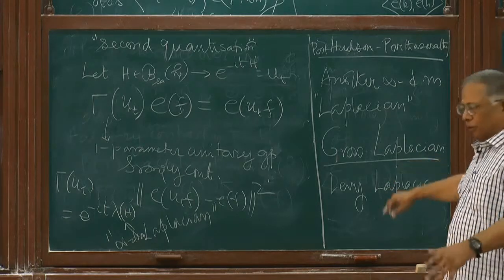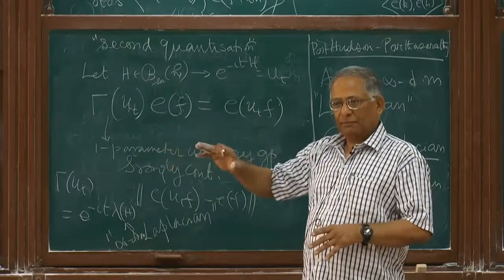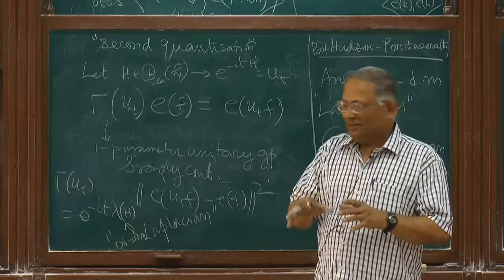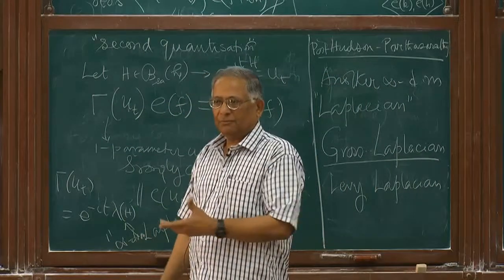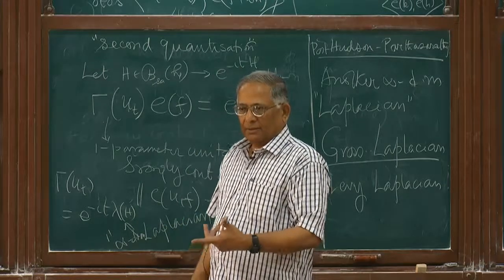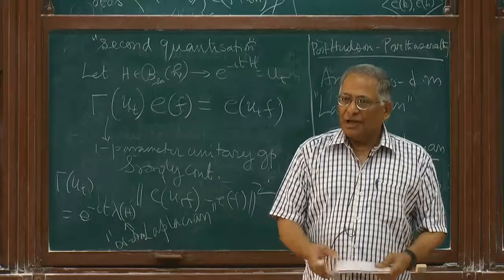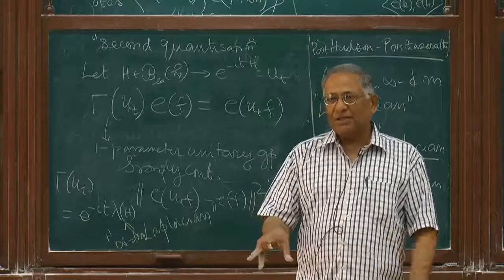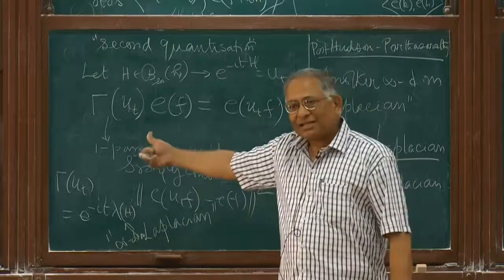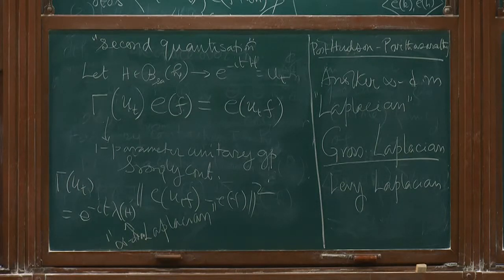Another infinite-dimensional Laplacian I will introduce is known as the Gross Laplacian, after Leonard Gross, which is different from lambda(H). There are many Laplacians you can write down in infinite dimension. There is also the Lévy Laplacian, still more exotic, after Lévy the probabilist. Here you are doing probability theory over infinite dimensions. The translation group is an infinite-dimensional translation group because the base space is infinite-dimensional.